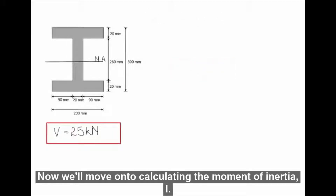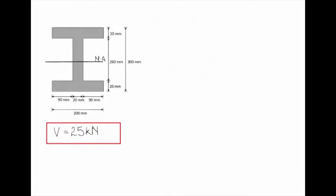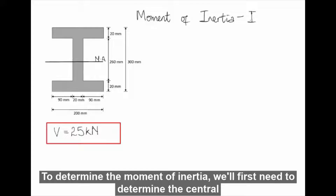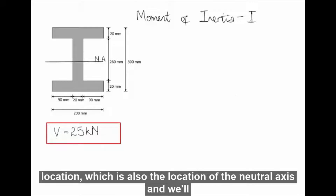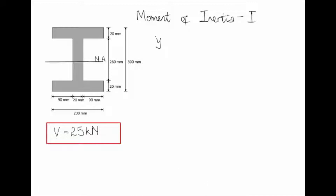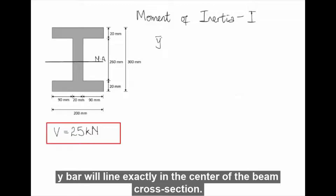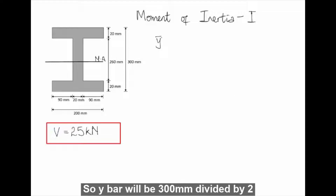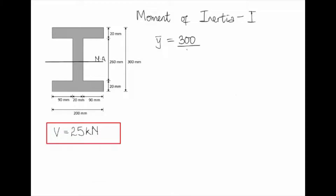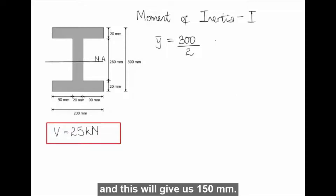Now we will move on to calculating the moment of inertia I. To determine the moment of inertia, we first need to determine the centroid location, which is also the location of the neutral axis, and we will call this Y-bar. Since this beam cross-section is symmetric, Y-bar lies exactly in the center, so Y-bar equals 300 mm divided by 2, giving us 150 mm.